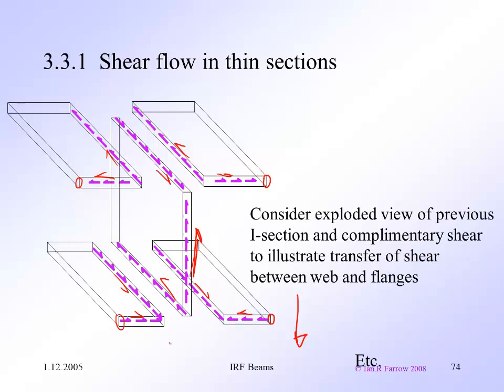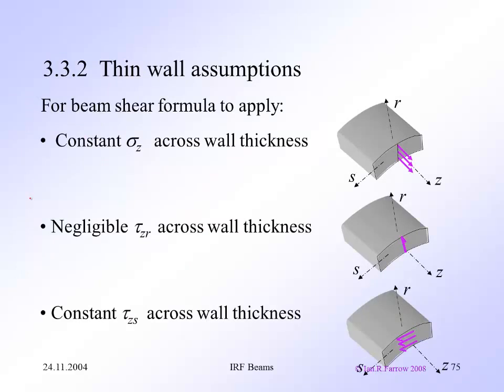You can use this approach to envisage the shear flow in any section you want. To apply the beam shear formula in this way, we need to make the following assumptions: direct stress is constant across the wall thickness, there's negligible shear stress across the wall thickness, and the shear stress along the wall is constant across the thickness.